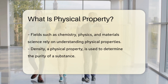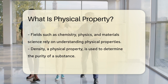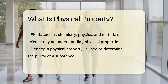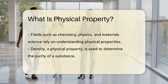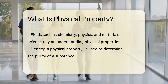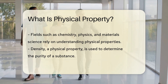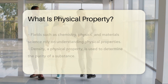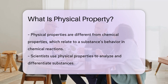They are essential in identifying and classifying matter based on their observable attributes. Understanding physical properties is crucial in various fields such as chemistry, physics, and material science. For example, density, which is a physical property, can help determine the purity of a substance.